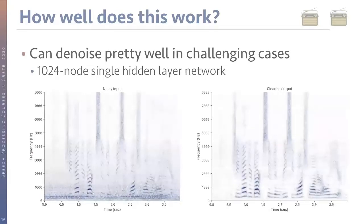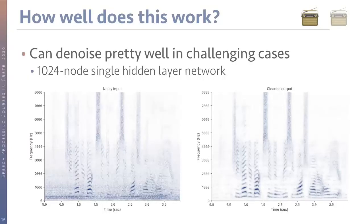How well does it work? It can denoise fairly well in challenging cases. Here's an example with a single hidden layer of 1024 nodes — a very small, simple network. The input has non-stationary noise (an engine revving) and the network has no trouble dealing with that. The output still has a few artifacts, but even for such a simple model it does a pretty good job.